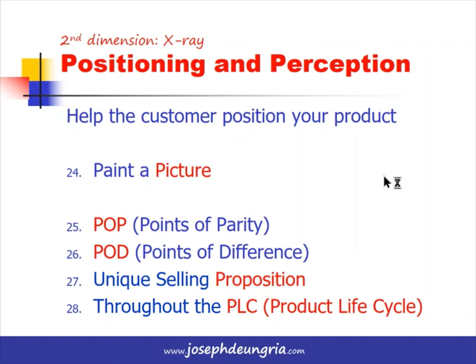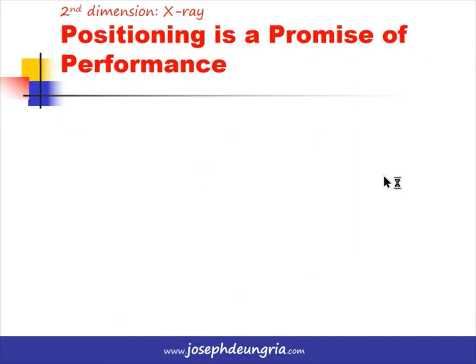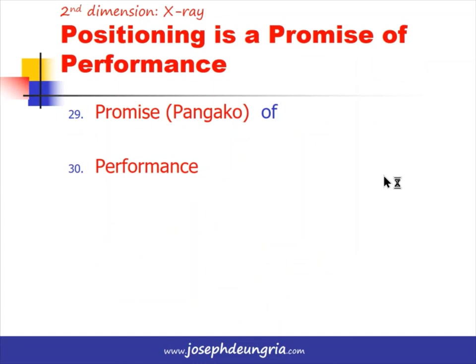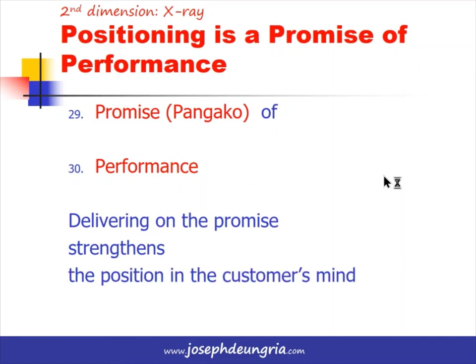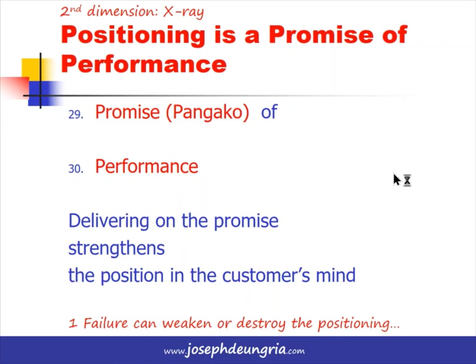Positioning is actually a promise of performance — a promise from the brand to deliver a certain level of performance that the customer will expect. Delivering on the promise strengthens the position in the customer's mind over time, while failure to deliver destroys positioning instantly and sometimes irreversibly. For example, if Jollibee promises safe, hot, and edible food and somebody dies of food poisoning, the undelivered promise can destroy the positioning for a long time.